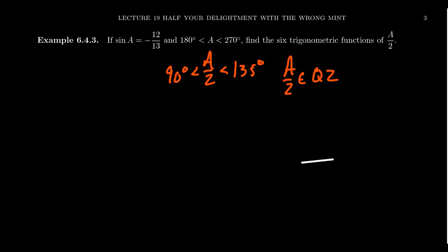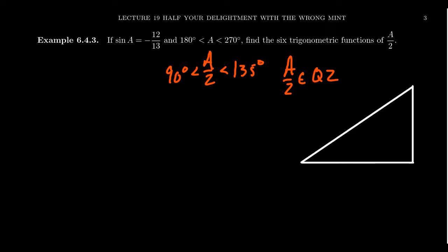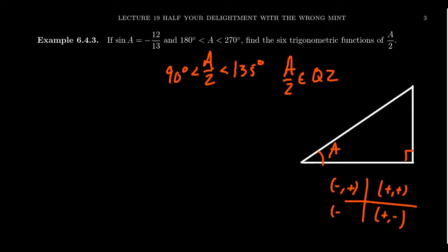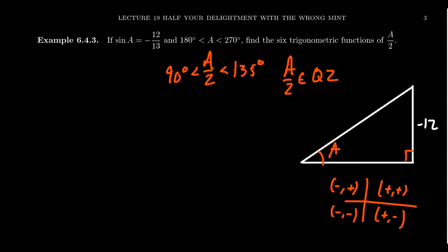To convert from sine of a to cosine of a, let's use a right triangle diagram. In the third quadrant, both sine and cosine are negative. Since sine of a equals opposite over hypotenuse equals negative 12/13, we have the opposite side as negative 12 and hypotenuse as 13. By the Pythagorean theorem, the other side has length 5, but since we're in the third quadrant, it's negative 5. Therefore, cosine of a equals negative 5/13.